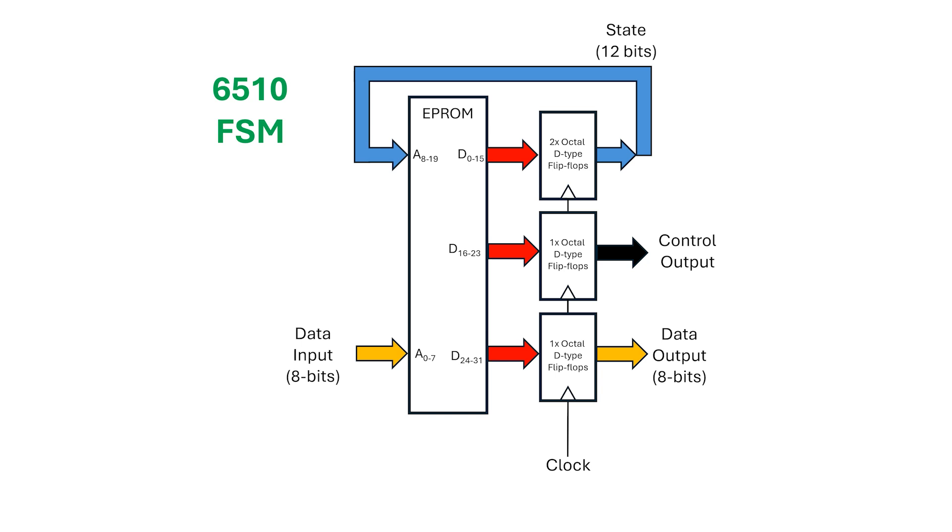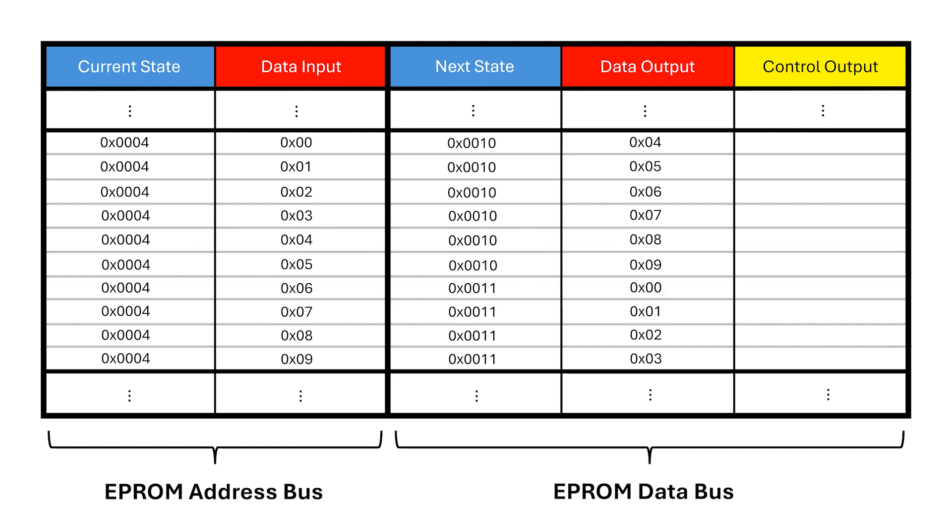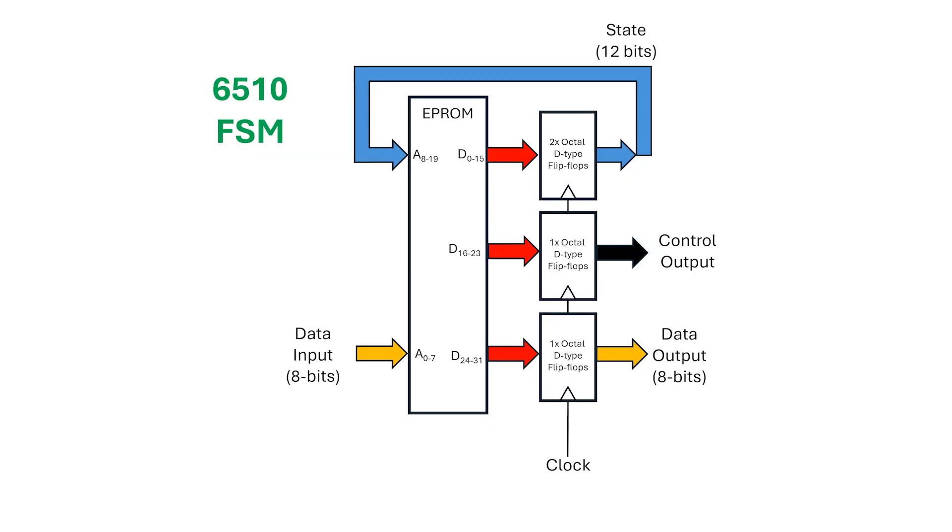So how do we use this structure to perform addition like we saw earlier? Let's say I present the number 4 as the first input. This gets stored in our next state register. Now I present 5 on the input lines. The EPROM lookup table sees both numbers 4 and 5, and outputs 9. It doesn't compute this using a conventional adder. Instead, it's just looking up the answer from a pre-computed table of all possible sums. But this raises another question. Where do the 4 and 5 come from, and where does the 9 go once we're done?